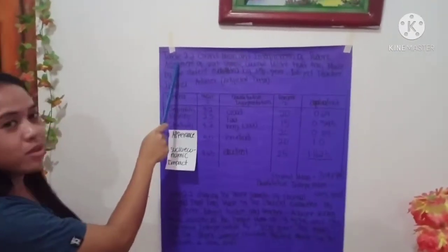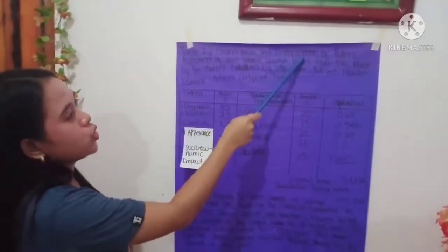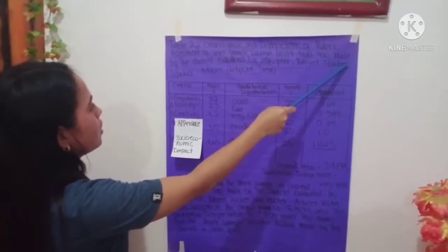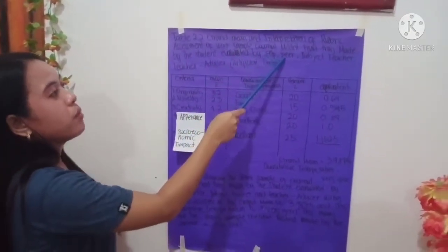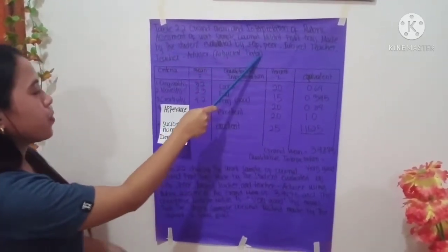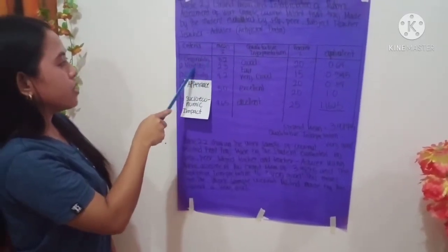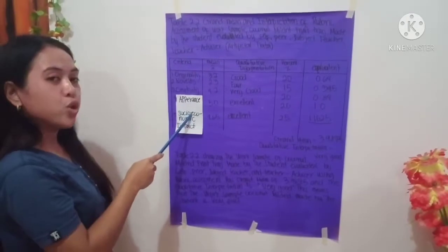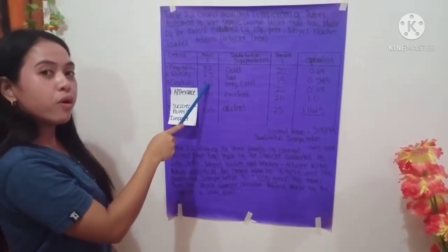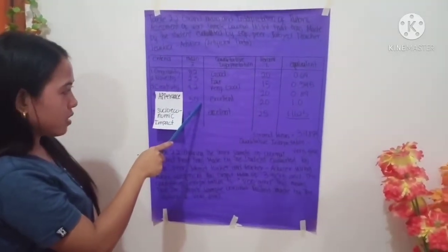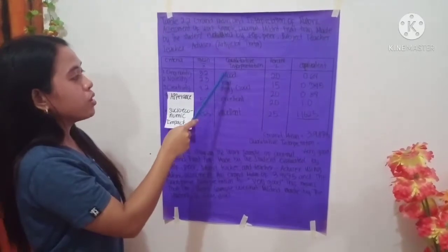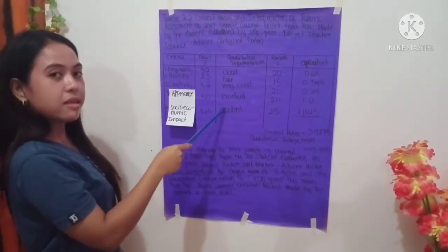This is Table 2.2: Grand mean and interpretation of rubric assessment of the work sample coconut mildred fruit tray, evaluated by self, peer, subject teacher, and teacher advisor. The criteria and their mean values are: originality — 3.2 (good); novelty — 2.3 (fair); creativity — 4.2 (very good); appearance — 5 (excellent); and socioeconomic impact — 4.65 (excellent).